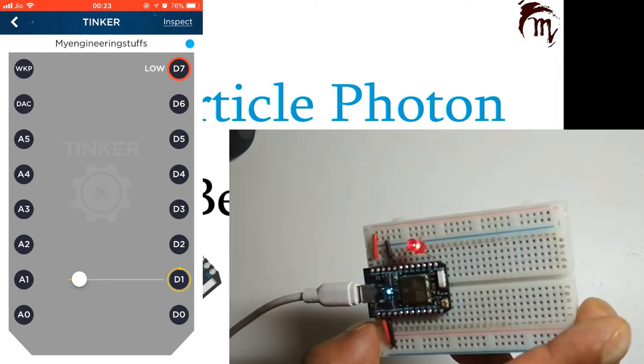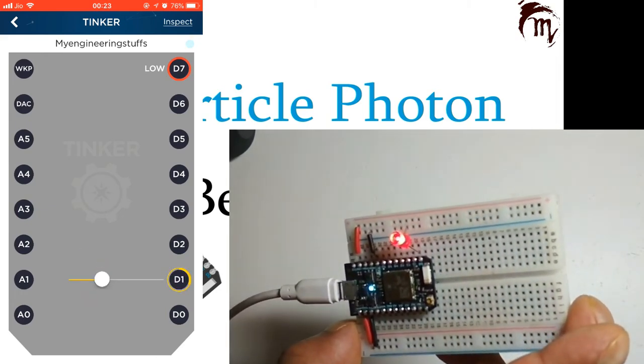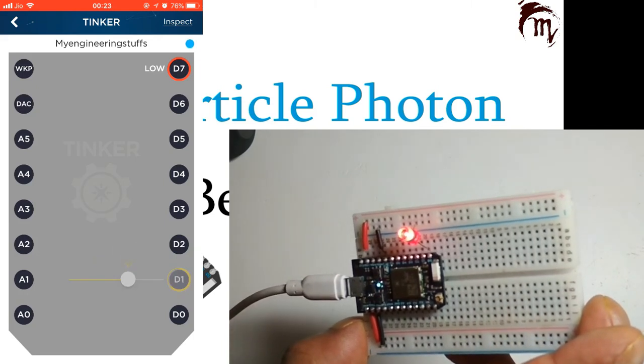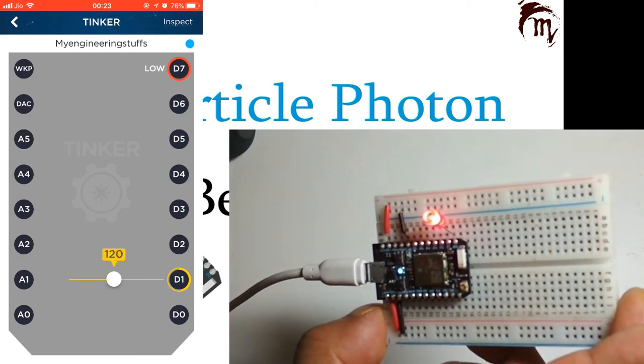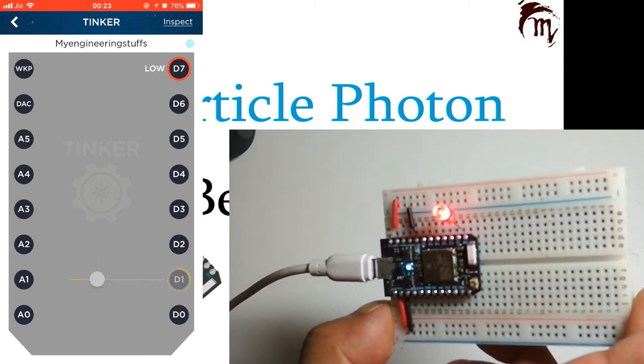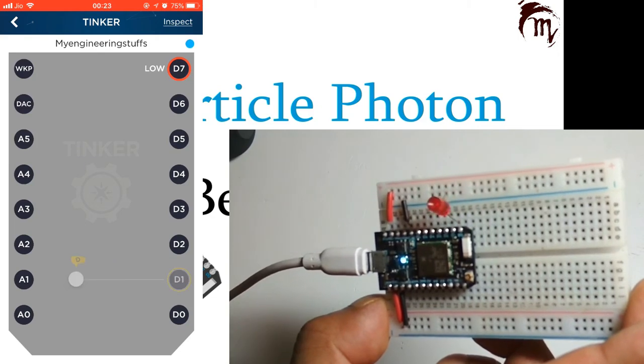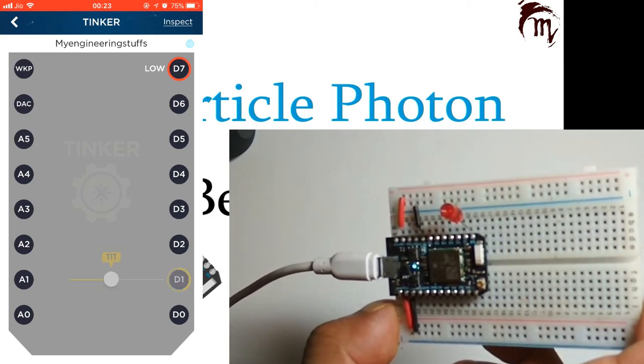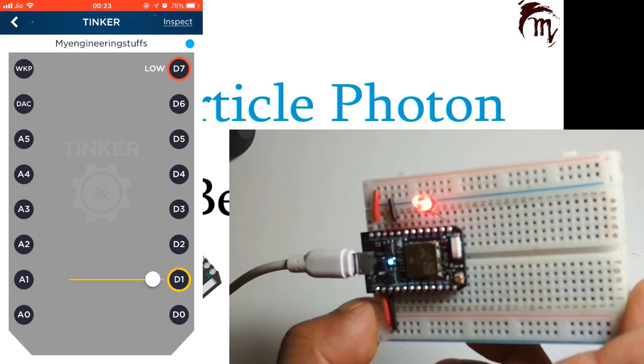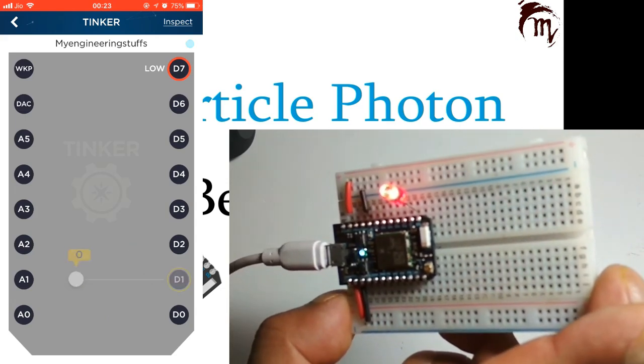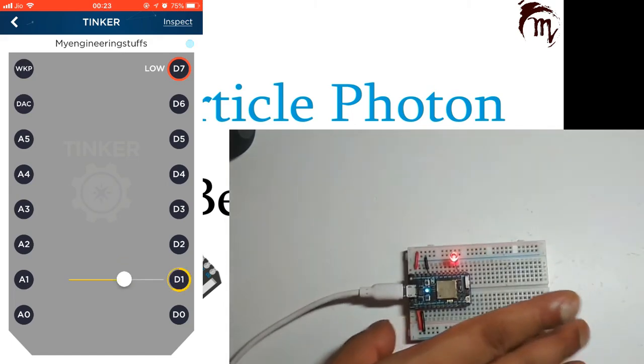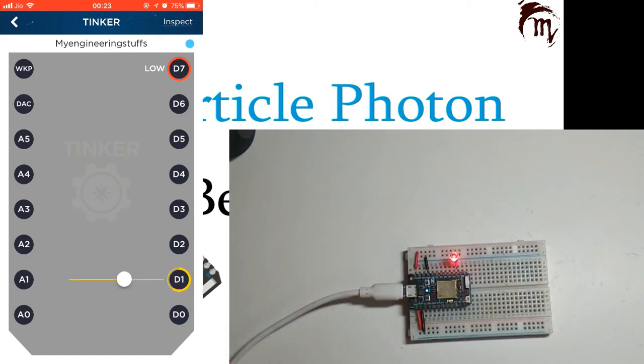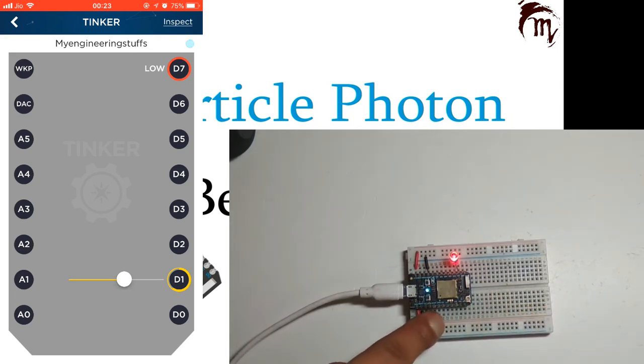As I increase the slider, the intensity of the LED increases. When I decrease it, the intensity also decreases. You can play with this Tinker app, or you can design your own code to control this Particle Photon from anywhere in the world because it's connected to the internet.